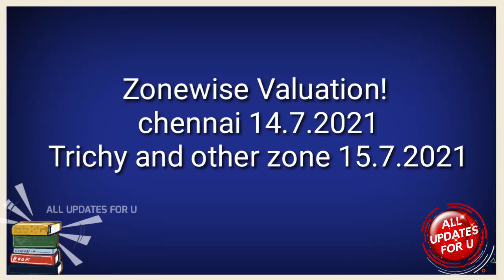Chennai zone: starting correction from July 4th. July 14th center for SCI Engineering College is one of the zones for paper correction. 3G zone: July 15th paper correction in the 3G zone.